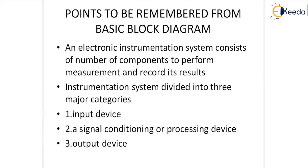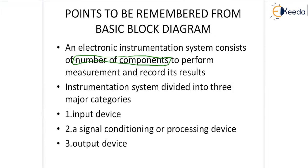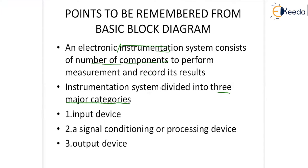An electronic instrumentation system consists of a number of components to perform measurement and record its results. This basic instrumentation system may be divided into three major categories: an input device, a processing device or signal conditioning device, and an output device.